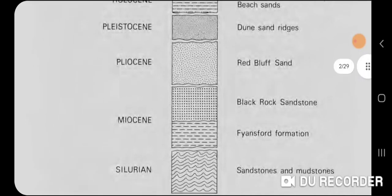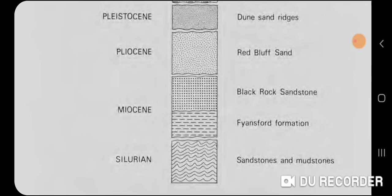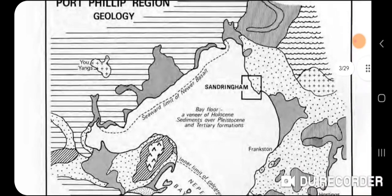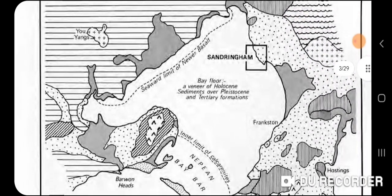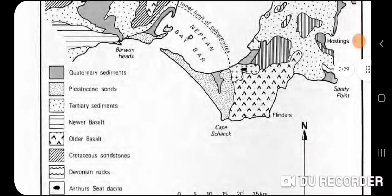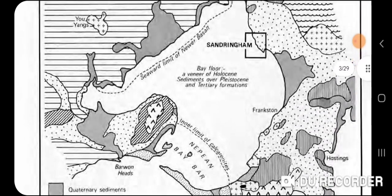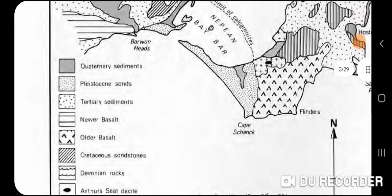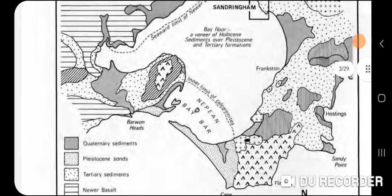Other interpretations suggest the Black Rock and Red Bluff are part of the same formation called the Balmorris Group. Here we have the Port Phillip region geological map. You can see the Nya Yangs granite outcrop and more granites over to the east near Frankston. The striped lines are the newer volcanics, and we've also got older basalts — especially on the Bellarine Peninsula, where you can see the newer volcanics are quite far from the older ones.